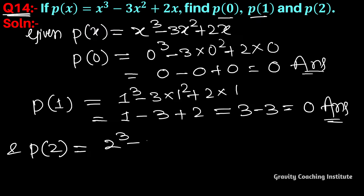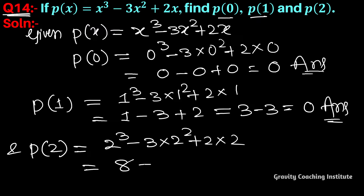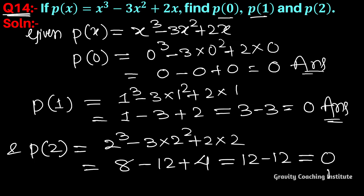And p(2): substituting x = 2, we get 2³ - 3 into 2 squared plus 2 into 2, so 8 - 3 into 4 plus 4, which gives 8 - 12 + 4 = 12 - 12 = 0. Answer: p(2) = 0.